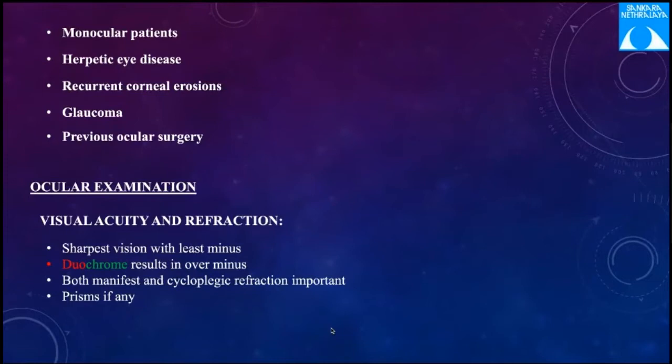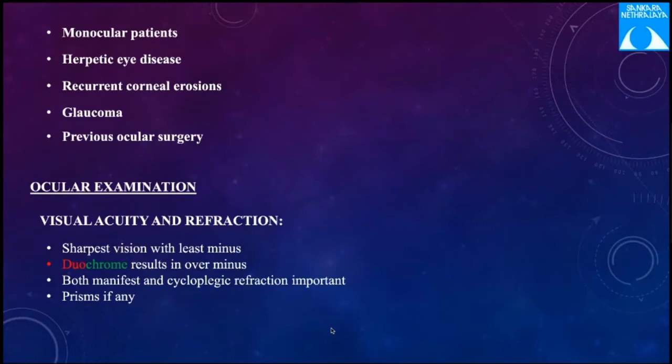Herpetic eye disease is a concern because it can get reactivated post-operatively, with activation of the latent disease. This is generally an absolute contraindication, and in cases of suspicion it should not be done. However, there is literature suggesting that in cases of unknown or unproven, non-severe history, with a real indication — high power, inability to wear glasses or contact lenses — these cases can be taken under strict systemic anti-herpetic treatment.